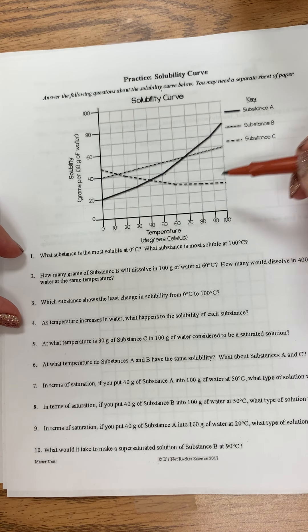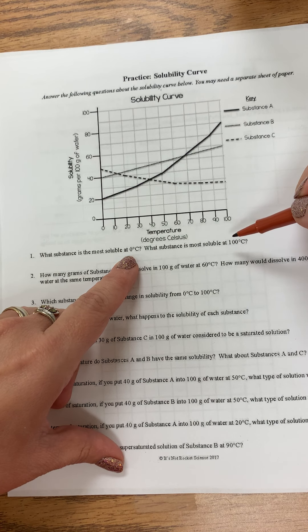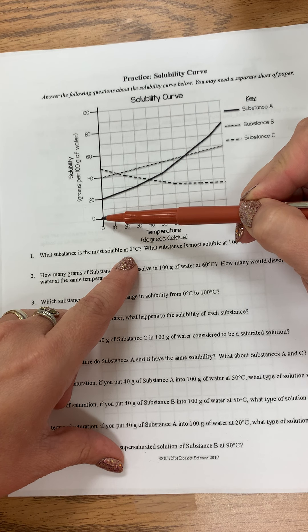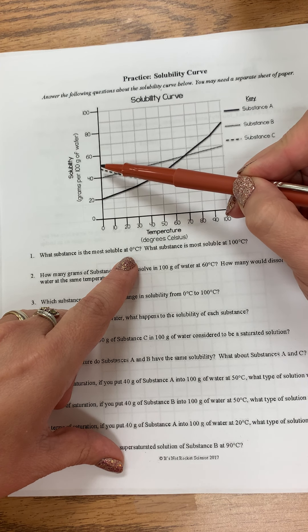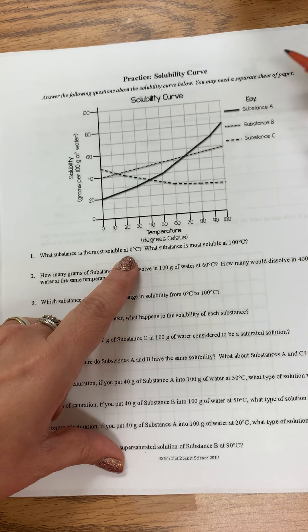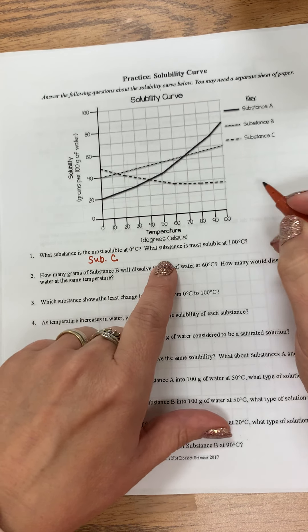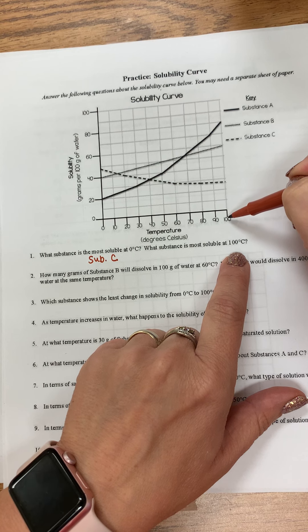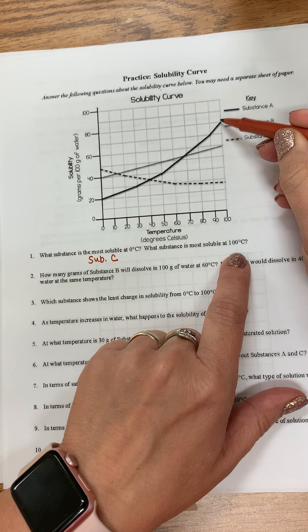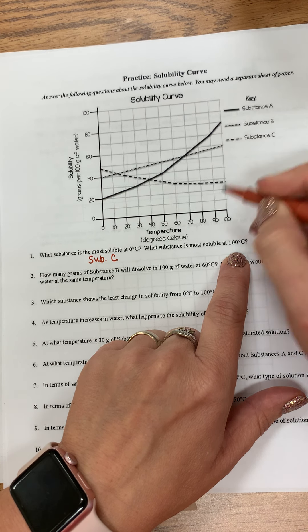So look at number one. What substance is the most soluble at zero degrees? So at zero degrees, most soluble means it will dissolve the most. So which one is the highest at zero? So I'll look up, it's the dashed line, and that's substance C. Which substance is most soluble at a hundred degrees? So if you look at a hundred, follow the graph up to the graph that has the highest mark, that is the solid line, which is substance A.